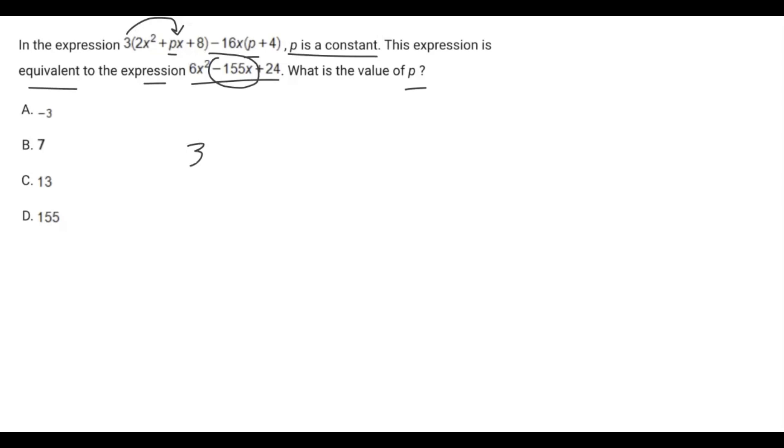So 3 times px is just 3p. I'm going to drop the x's for each term because x is in each of these equations. Over here we have negative 16x times p, so just negative 16p, and I almost forgot the plus 4, so it's p plus 4.